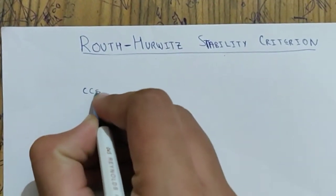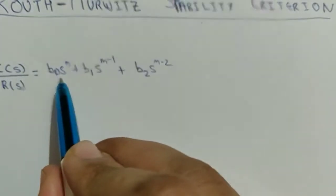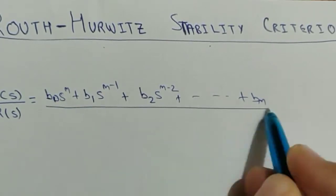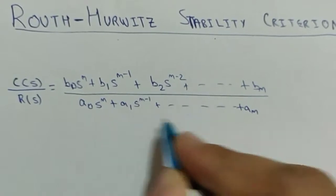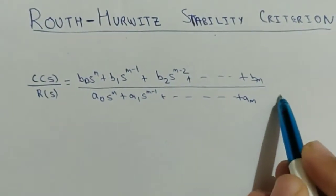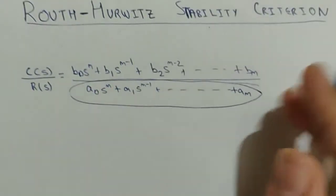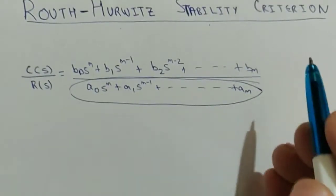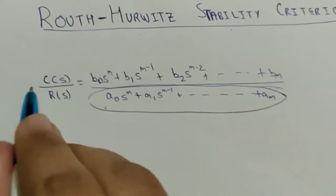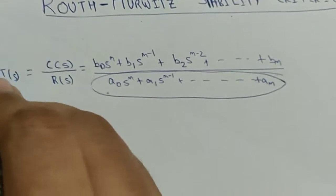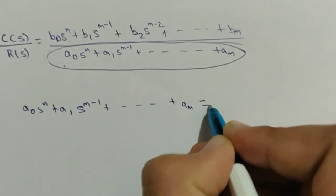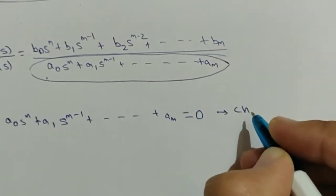Let's assume a transfer function C(s)/R(s) = (b0·s^n + b1·s^(n-1) + b2·s^(n-2) + ... + bn) in the denominator. We have to check its stability using the Routh-Hurwitz stability criterion. Whatever transfer function is given to you, you will only look at the denominator — the numerator is none of our concern. If we equate the denominator to 0, we get an equation called the characteristic equation. So the characteristic equation is: a0·s^n + a1·s^(n-1) + ... + an = 0.